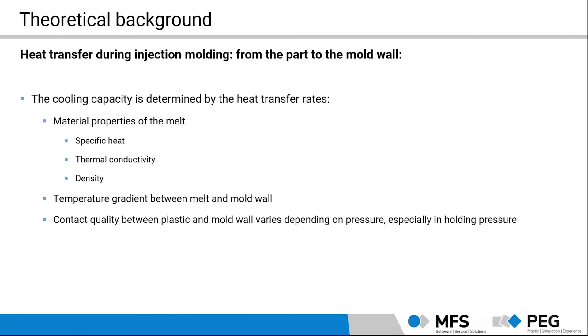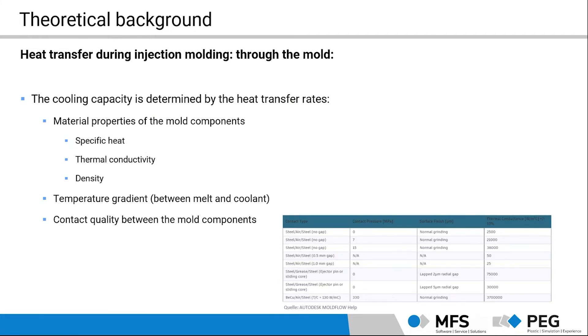For example, the material properties of the melt, how they affect the heat transfer. But also the contact quality between our part like plastic and the mold wall. As this varies during the cycle and is depending on the pressure situation. And of course, we know there are differences between filling phase, packing phase and then the cooling phase. Also the heat transfer through the mold itself is determined by the material properties. And especially if you have different inserts, mold inserts, different mold plates, the contact between all those different components is very important for the heat transfer itself.